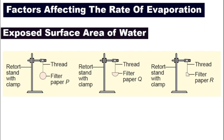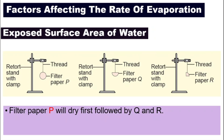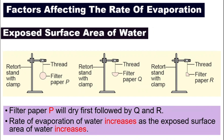To test this out, we will hang three different filter papers on three different retort stands. For filter paper P, we will not fold it and we will wet it by spraying water on it. For filter paper Q, we will wet it but fold it into half. For filter paper R, we will spray some water but fold it two times so that it is only one-fourth of the original size. You will find that filter paper P dries first, followed by Q, and the last to dry is filter paper R, because the rate of evaporation increases if the exposed surface area increases.